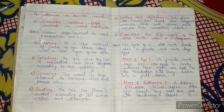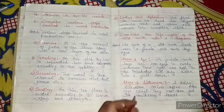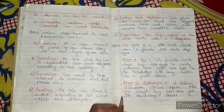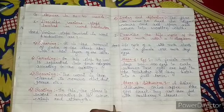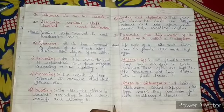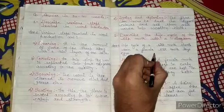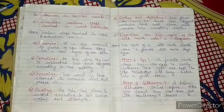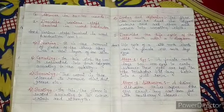Second hai: describe the life cycle of the silk moth. Ab yaha pe hume life cycle pardhani hai silk moth ki. Life cycle of a silk moth starts when a female silk moth lays eggs. Yeh tab start hoti hai jab bhi female silk moth jo hoti hai, woh egg lay karti hai. Pehla stage hota hai egg ka.